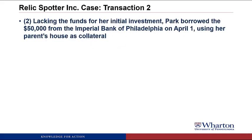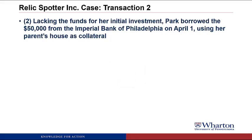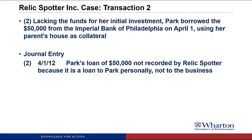Transaction two: lacking the funds for her initial investment, Park borrowed $50,000 from the Imperial Bank of Philadelphia on April 1st, using her parents' house as collateral. There is no journal entry for this, because Rebecca Park is borrowing the money personally — it's not Relic Spotter that's borrowing the money. There is something called the entity concept, which says the only things that should go in a company's books are transactions for the company, not transactions for employees. Rebecca Park's personal loan does not show up in the Relic Spotter books.